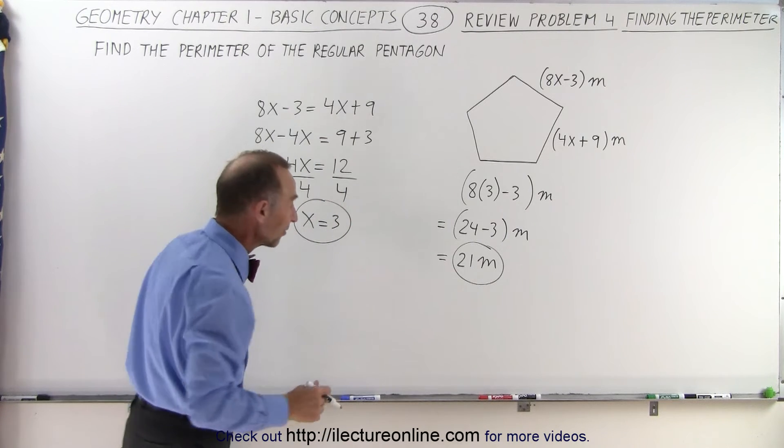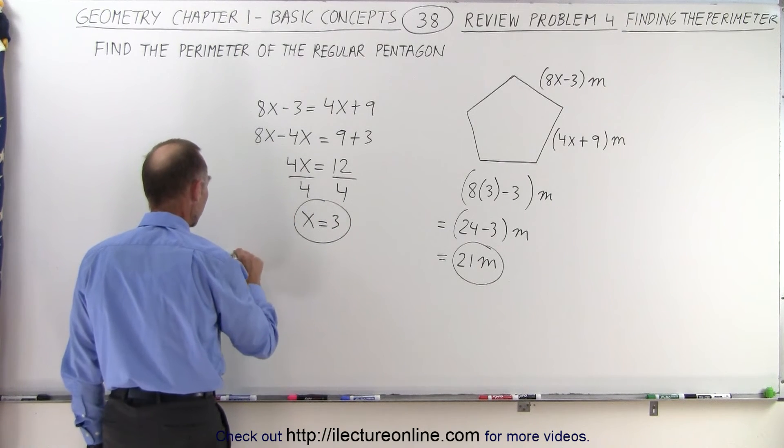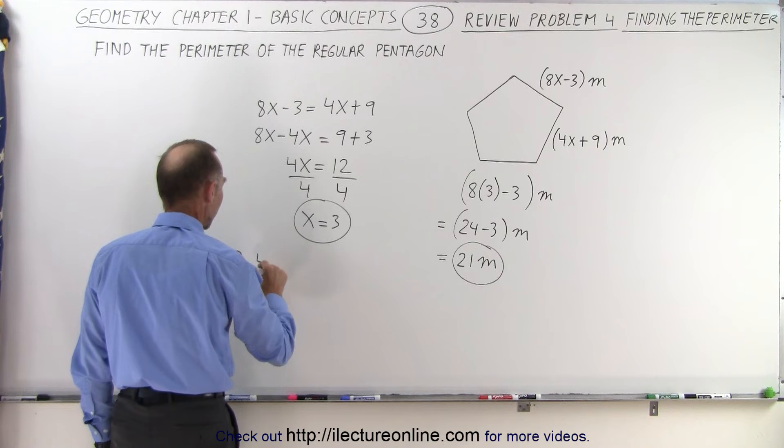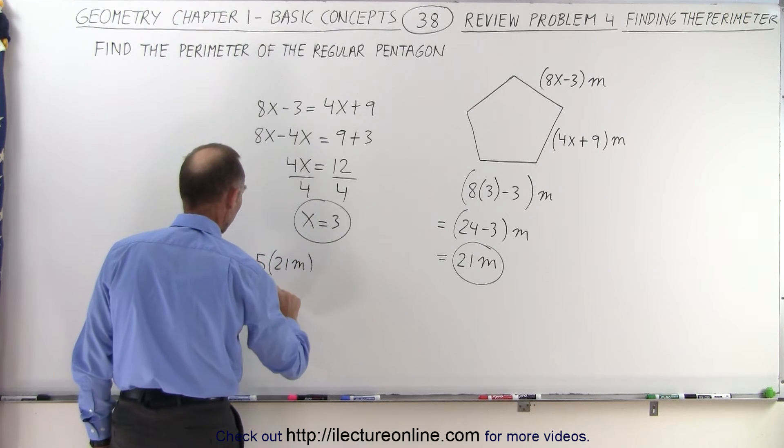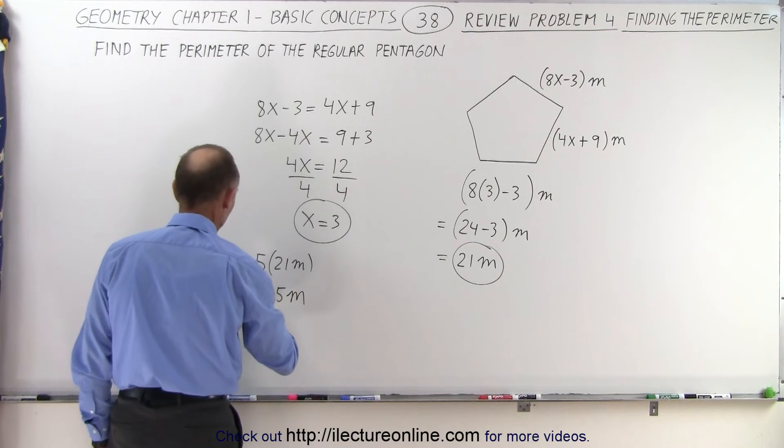Since the pentagon has 5 sides, the perimeter equals 5 times 21 meters, which is 105 meters.